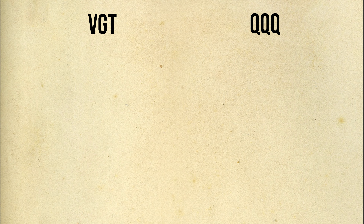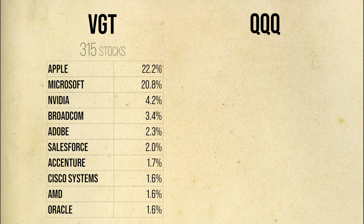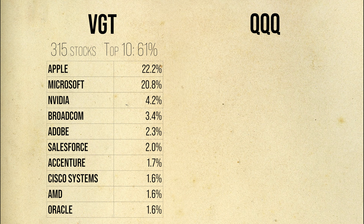Next is portfolio concentration. In total, VGT tracks about 315 companies. Here are the top 10 holdings of VGT. You immediately see a high concentration of assets in just two stocks — Apple and Microsoft — which account for a whopping 43% of the fund's total assets. The top 10 holdings account for 61%. If your investment goal is diversification, that's not a good sign.